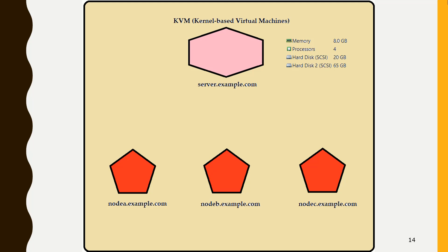Using KVM, one can run multiple virtual machines like Linux or Windows. Each virtual machine has private virtualized hardware — network card, disk, graphics, etc. In my setup I have server.example.com, and from that KVM machine I am going to create 3 nodes: nodeA.example.com, nodeB.example.com, and nodeC. These are the cluster nodes, all running the same OS version. The benefit of KVM is you can configure it on your laptop if you have 16 GB of memory and enough resources.